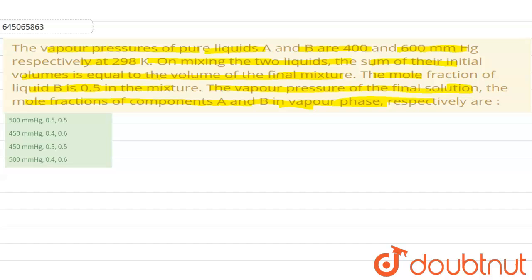So first of all, what is given in the solution: vapor pressure of pure A, that is P⁰A, is equal to 400 mmHg. Vapor pressure of pure B is equal to 600 mmHg. Mole fraction of B is given as 0.5.